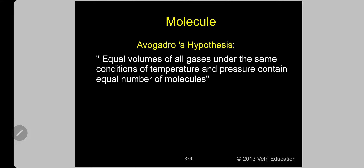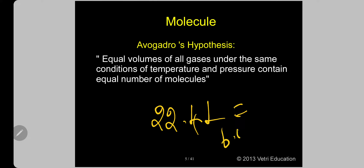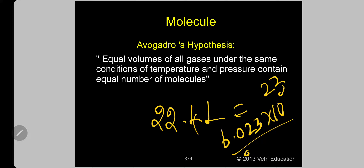Equal volumes of all gases under the same condition of temperature and pressure contain equal number of molecules. That means 22.4 liters of any gas will contain 6.023 × 10²³ atoms or molecules. For atomic gases, 22.4 liters contains 6.023 × 10²³ atoms; for molecular gases, 22.4 liters contains 6.023 × 10²³ molecules. This is Avogadro's hypothesis.